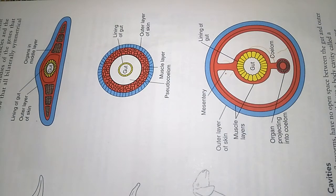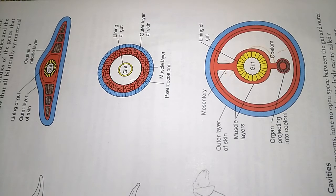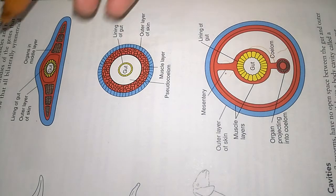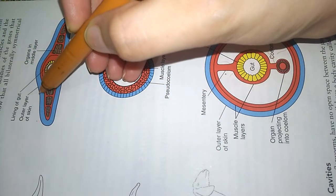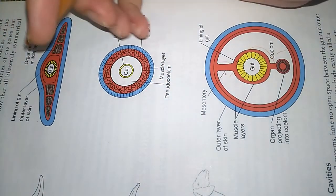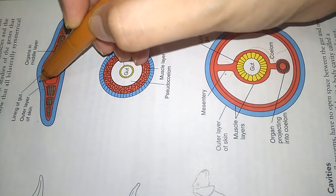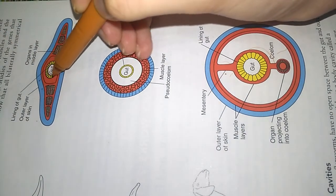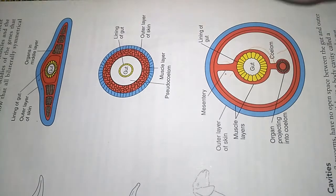Hello everybody and welcome to Biological World. Now we will discuss about body cavities, or coelom. Basically a coelom is a fluid-filled cavity that separates the outer wall of the body from internal organs. Simplest organisms such as jellyfish and flatworms are acoelomates that have no space separating their outer surface from internal organs. As we can see in this diagram, this bluish area is the outer lining of the skin, and there is no space present between this outer layer and the internal lining of the gut — so we call it acoelomate.